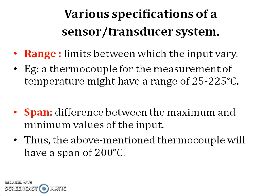The various specifications of a sensor transducer system. Range is the limits between which the input can vary. For example, a thermocouple for the measurement of temperature might have a range of 25 to 225 degrees Celsius. Span is the difference between the maximum and the minimum values of the input. Thus, the above-mentioned thermocouple will have a span of 200 degrees Celsius.